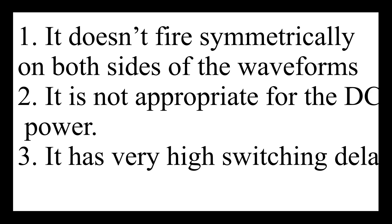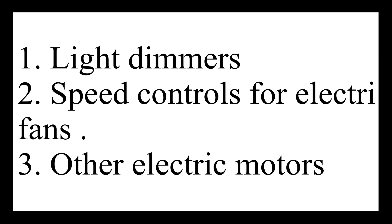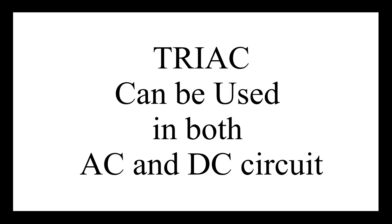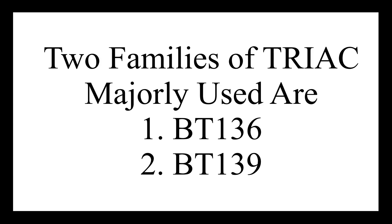It also has very high switching delay. Applications of TRIAC: TRIACs are used in numerous applications such as light dimmers, speed control for electric fans and other electric motors, and in modern computerized control circuits of numerous household small and major appliances. They can be used both in AC and DC circuits, however the original design was to replace the utilization of two SCRs in AC circuits. There are two families of TRIACs which are mainly used for application purposes: BT136 and BT139.